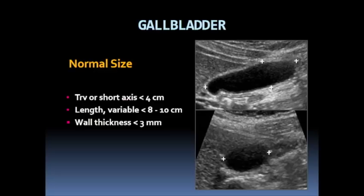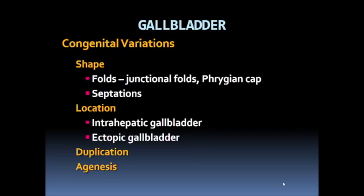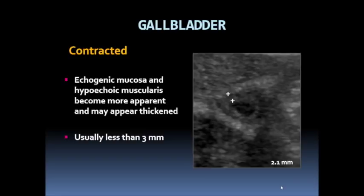The normal gallbladder wall is typically less than 3 millimeters. When a gallbladder is contracted, the echogenic mucosa and the hypoechoic muscularis become more apparent, and visually the gallbladder may appear thickened. However, when measured, it is usually less than 3 millimeters.